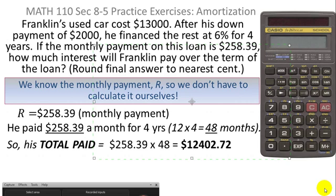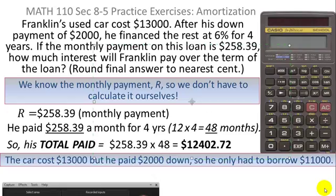It says the car cost $13,000, but he paid $2,000 down. So he didn't borrow $13,000. He really only borrowed $11,000.